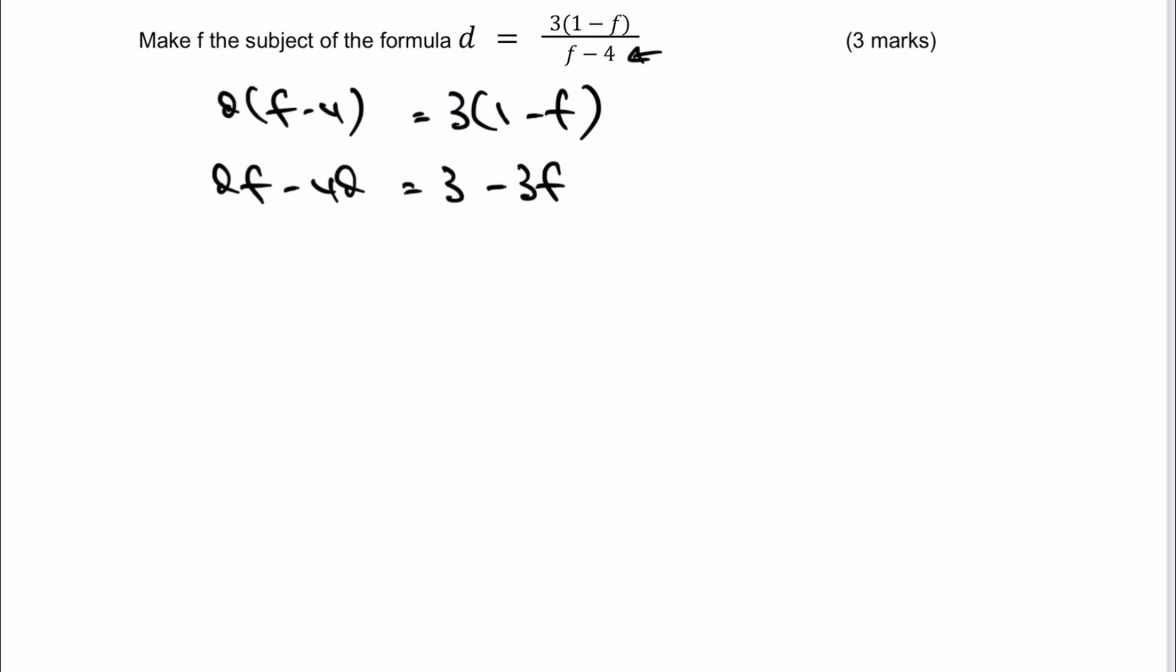Okay, so the problem is that if I want to make f the subject of the formula, I need to make sure that both the terms that contain f, i.e. this one and this one, are on the same side. Now, what I'm going to do is take that minus 3f and put it on the left-hand side because I want it to be a positive value.